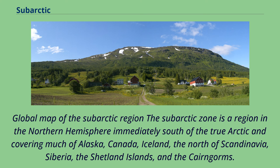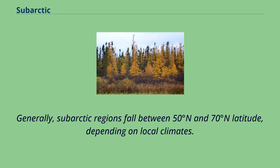The subarctic zone is a region in the northern hemisphere immediately south of the true Arctic, covering much of Alaska, Canada, Iceland, the north of Scandinavia, Siberia, the Shetland Islands, and the Cairngorms. Generally, subarctic regions fall between 50 degrees north and 70 degrees north latitude, depending on local climates.